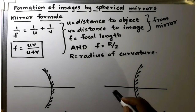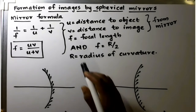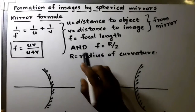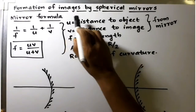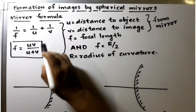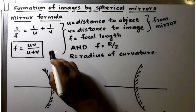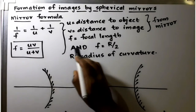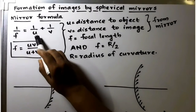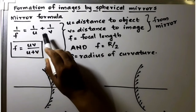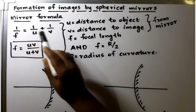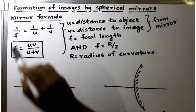Before we start our problems, let us recollect the important points related to the image formation by spherical mirrors. The first thing we have to remember throughout the problems: 1/f is equal to 1/u plus 1/v. This formula is known as the mirror formula.